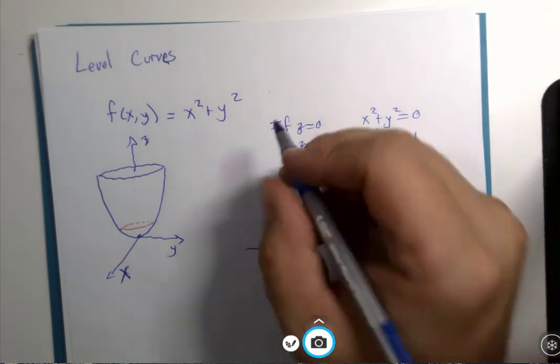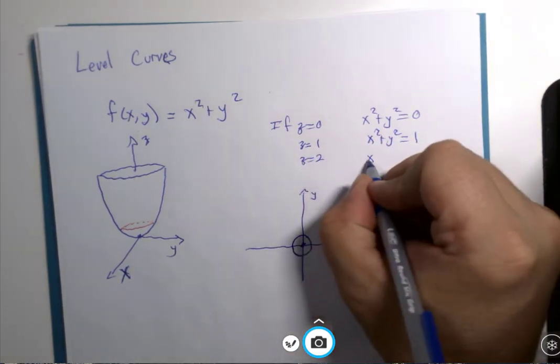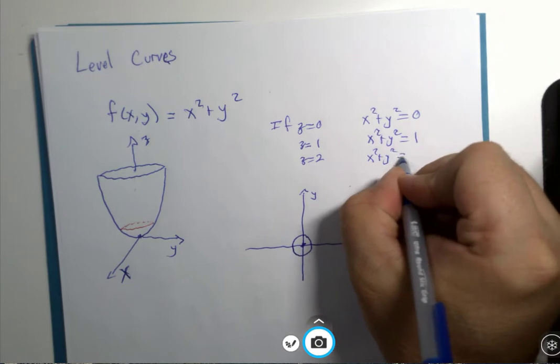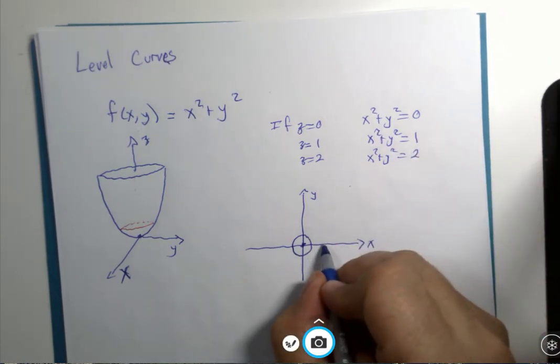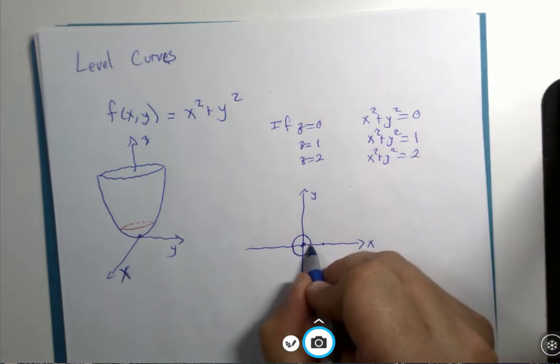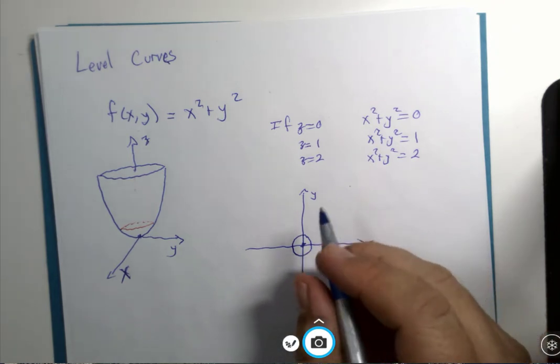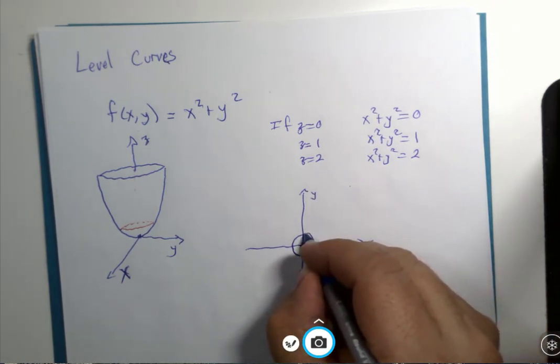And then if we went up to z equals 2, x squared plus y squared equals 2, well that's a slightly larger circle, square root of 2, but it would be just a little bit larger than this one.